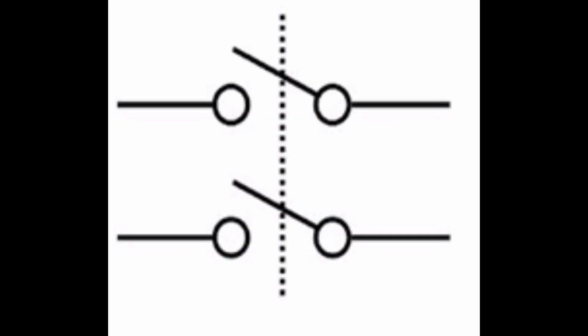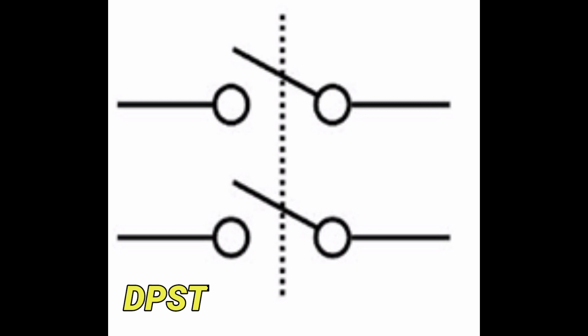Working of a DPST switch: DPST stands for dual pole single throw. Dual pole means the unit contains two identical switches side by side, operated by a single toggle or lever. This means two independent circuits are controlled at the same time by a single push.